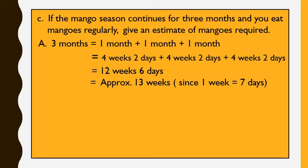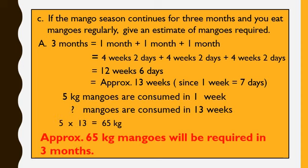Now we also know that 1 week consists of 7 days. So we will add 1 to 12 weeks, giving us 12 plus 1 total 13 weeks. Now 5 kg mangoes are consumed in 1 week. Then how many mangoes will be consumed in 13 weeks? So we will cross multiply 5 and 13. So 5 times 13 is 65, then we will divide it by 1, so we get 65. So approximately 65 kg mangoes will be required in 3 months.